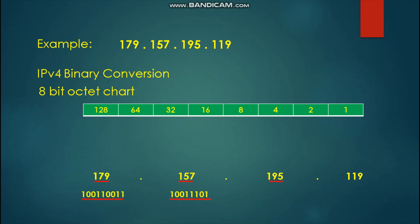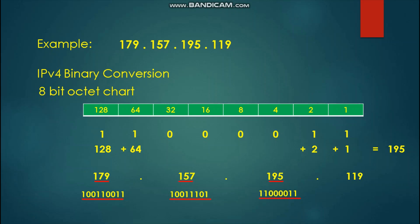Next, we solve for 195. We place binary 1 to 128, binary 1 to add 64, binary 1 to add 2, and binary 1 to add 1. Adding these numbers gives us a result of 195. All numbers not part of the addition will have binary 0s. The binary equivalent of 195 is 1-1-0-0-0-0-1-1.